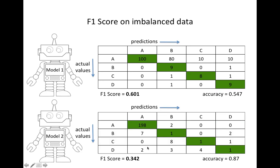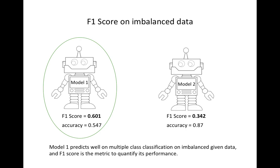I'll skip model 2's F1 score calculation — you can do it for practice. The F1 score of model 1 is 0.601, and the F1 score of model 2 is 0.342. So F1 score-wise, model 1 is better than model 2, even though the accuracy of model 1 is lower than model 2. This shows that model 1 predicts well on multiple classification with imbalanced data, and the F1 score is the metric to quantify its performance.